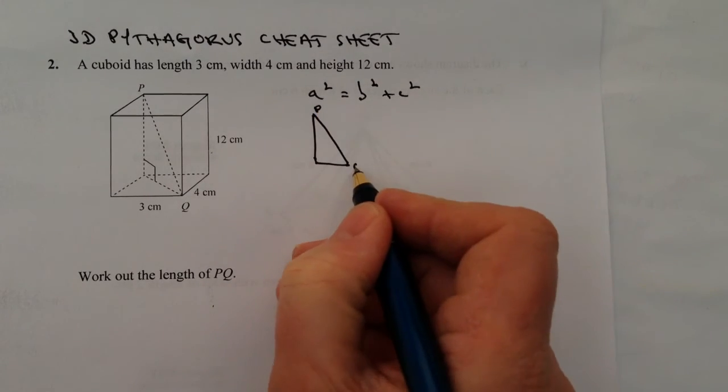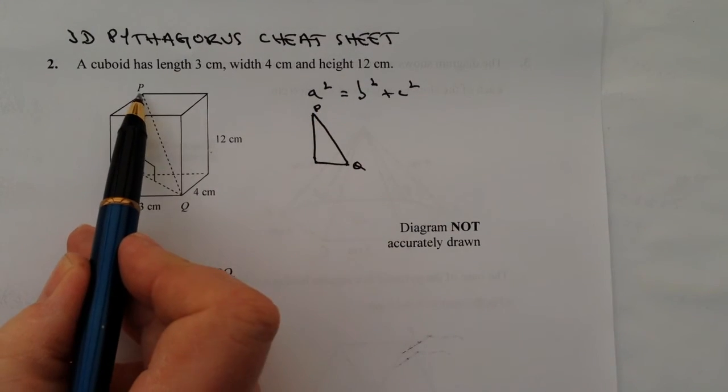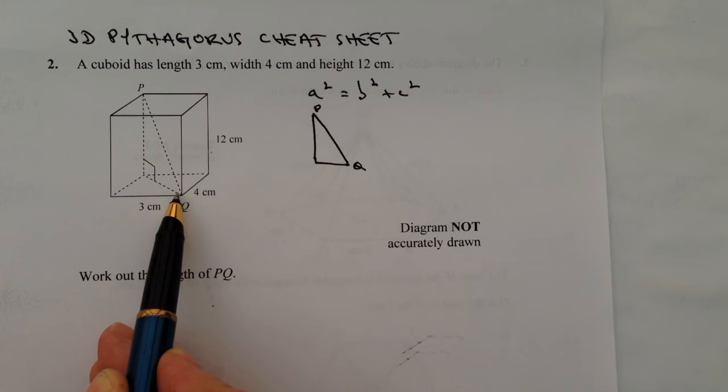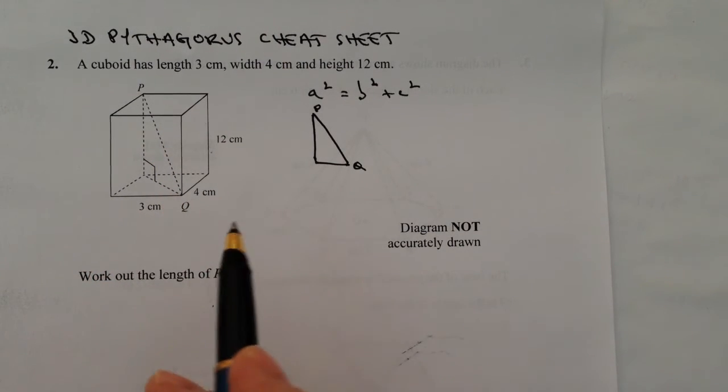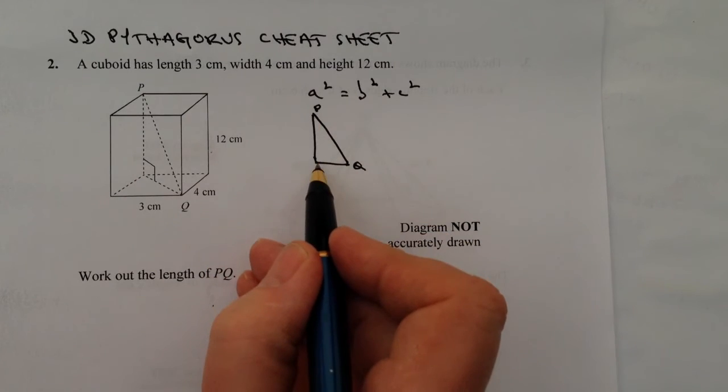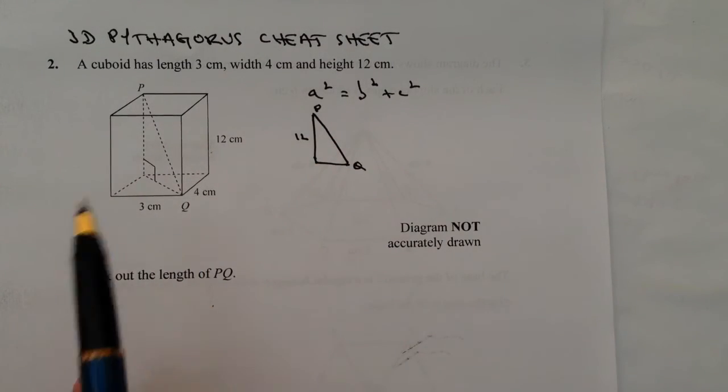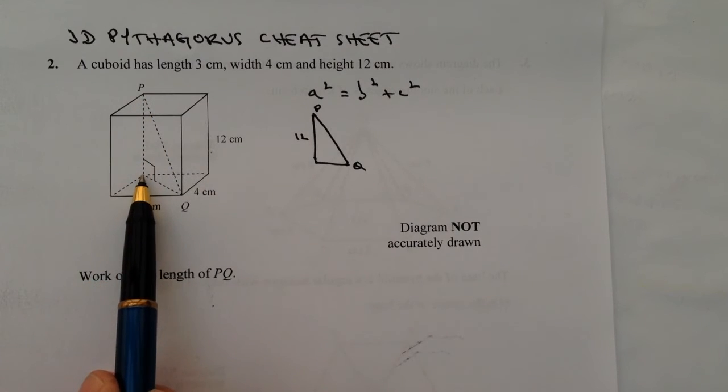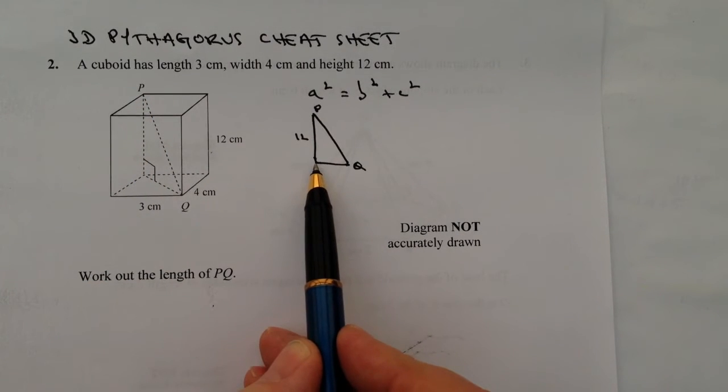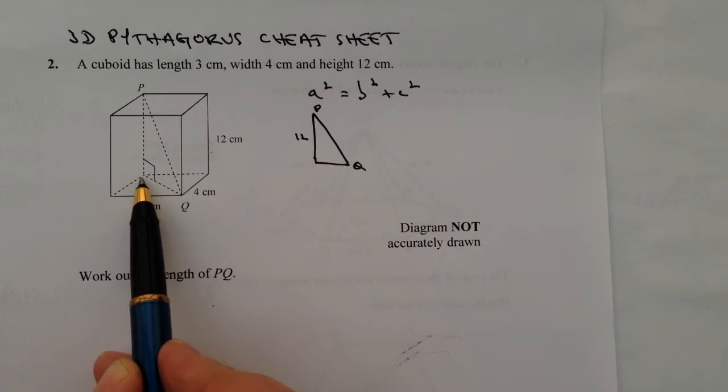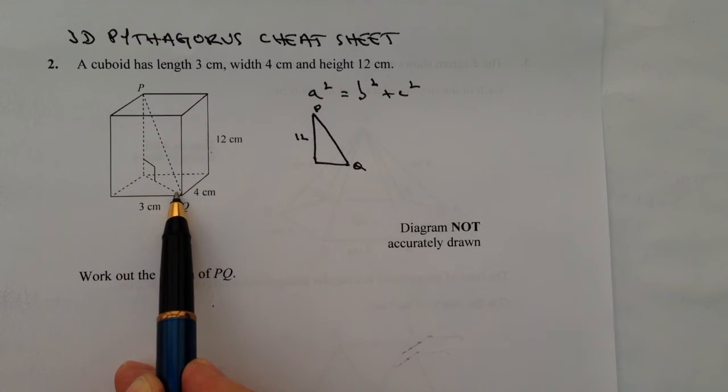Well that's P and that's Q, and we can get that from the diagram there. We also know the height. Well that's OK, we know this is 12 because it gives us that. The difficulty with this is we need to know this length, which is across the diagonal of the bottom rectangle of this particular box.